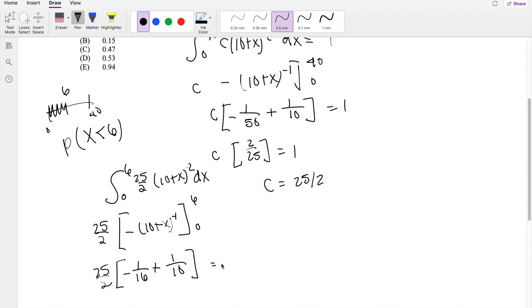So then this is equal to 25 over 2 times 3 over 80. So this is equal to 0.46875, which is approximately equal to 0.47.